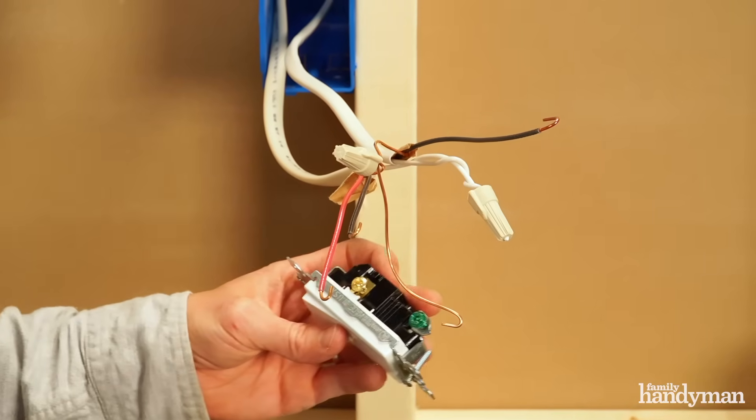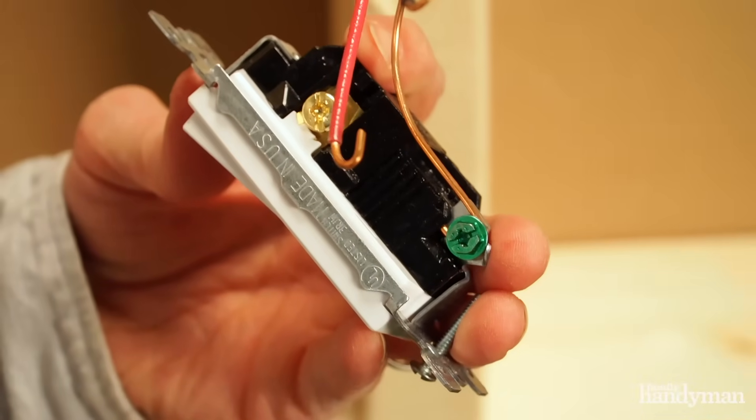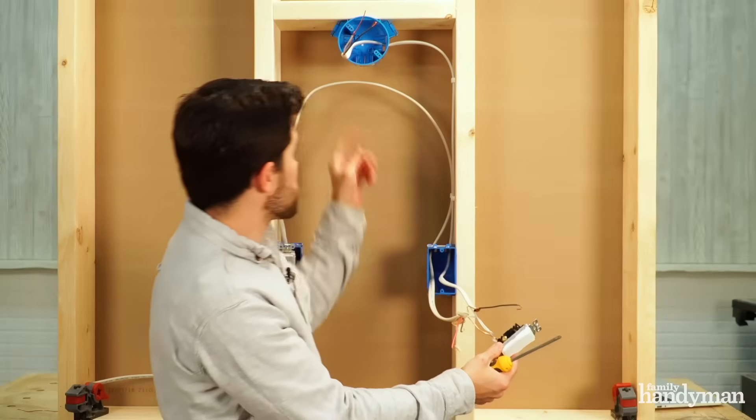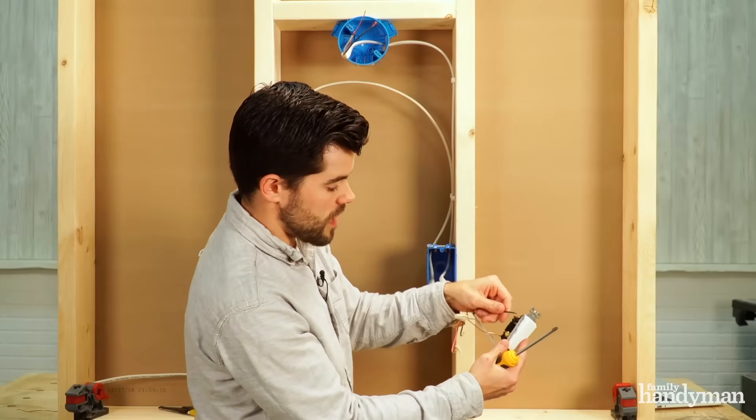Just like before, attach the ground wire to the switch. Now pay attention here. This is where the black wire from the light gets attached to the common terminal.